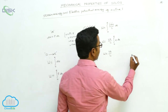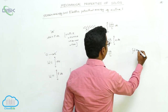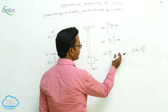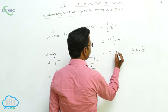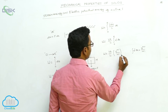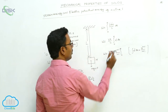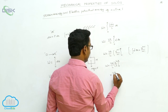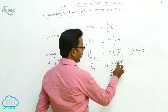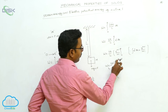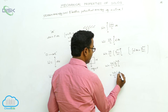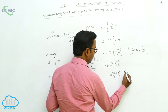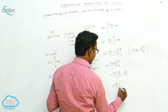Now W = (YA/L)·∫₀ᴱ E·DE. Using the formula ∫xⁿ dx = xⁿ⁺¹/(n+1), with E in place of x and n = 1, we get E²/2. Applying the limits 0 to E: upper limit gives E²/2, lower limit gives 0²/2 = 0. Therefore W = (YA/L)·(E²/2).